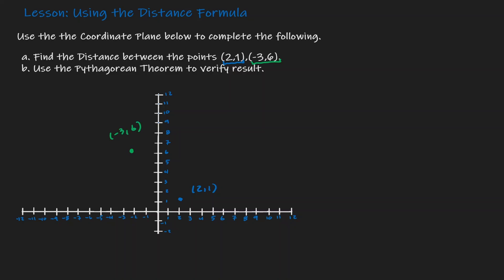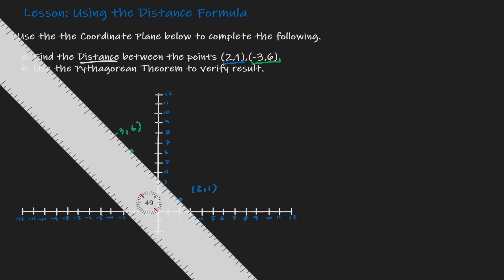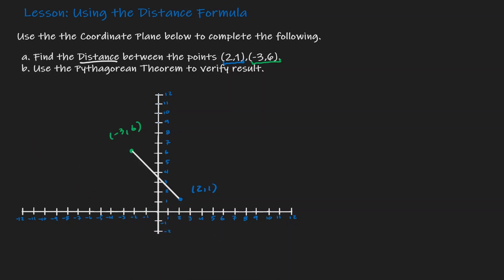What we want to do is find the distance between those two points. So if we connect those two points in a straight line, we want to find out the length of that line. Well, we have already defined a distance formula.